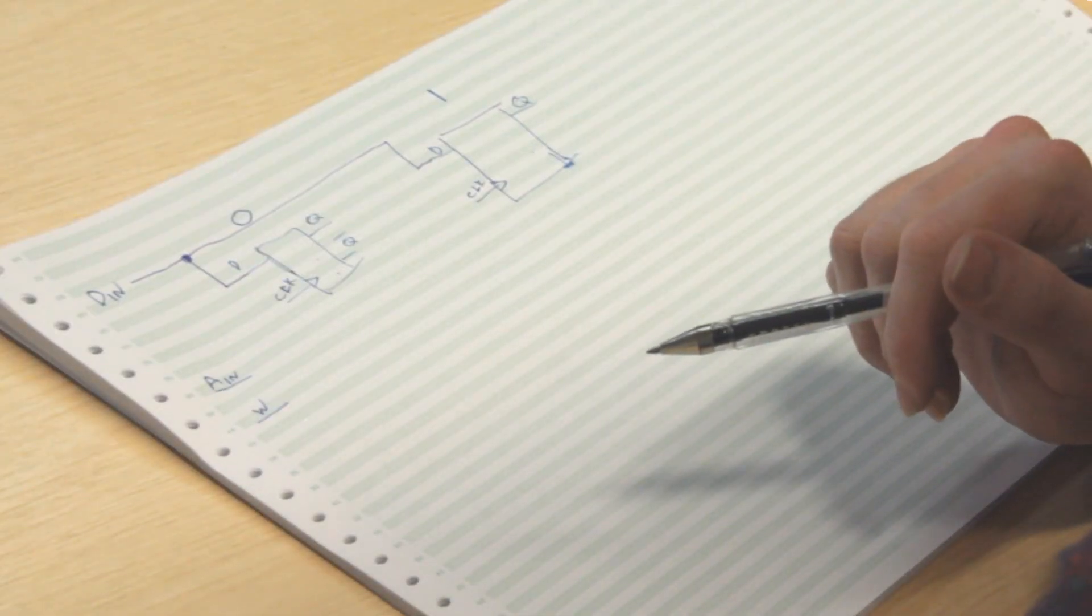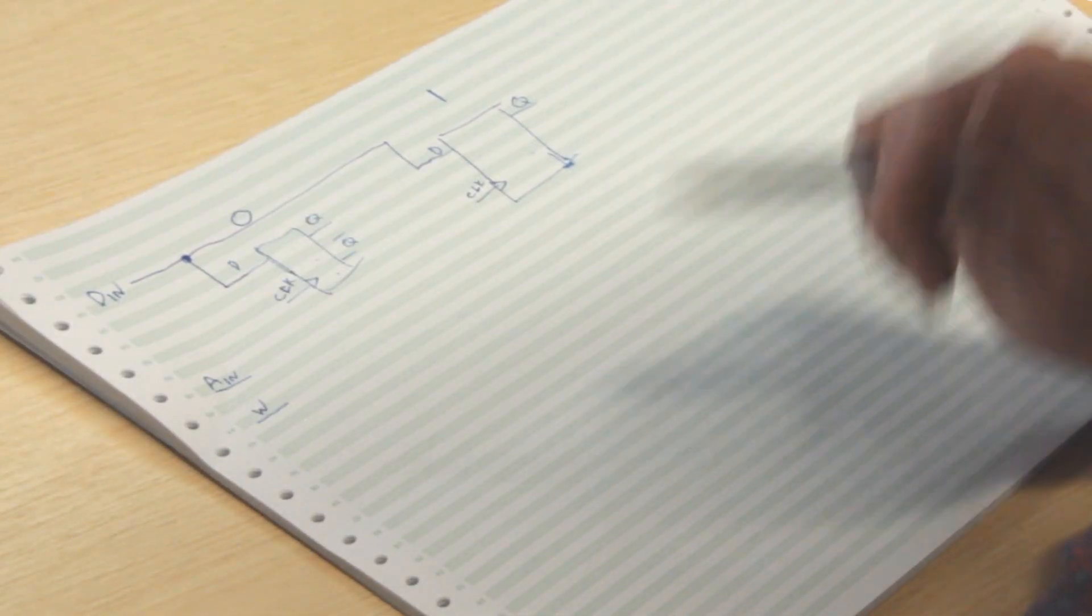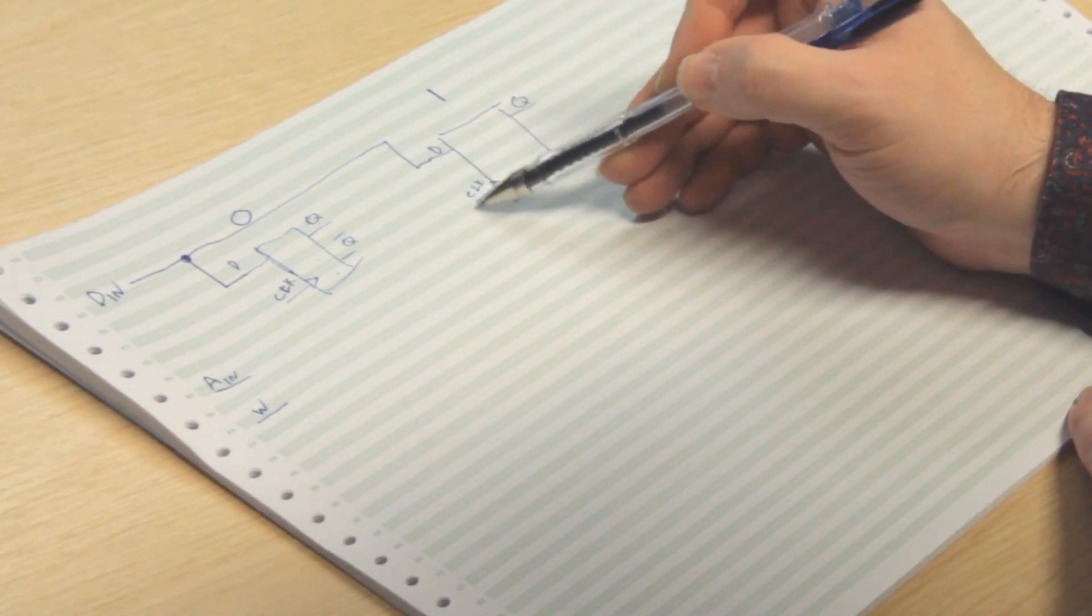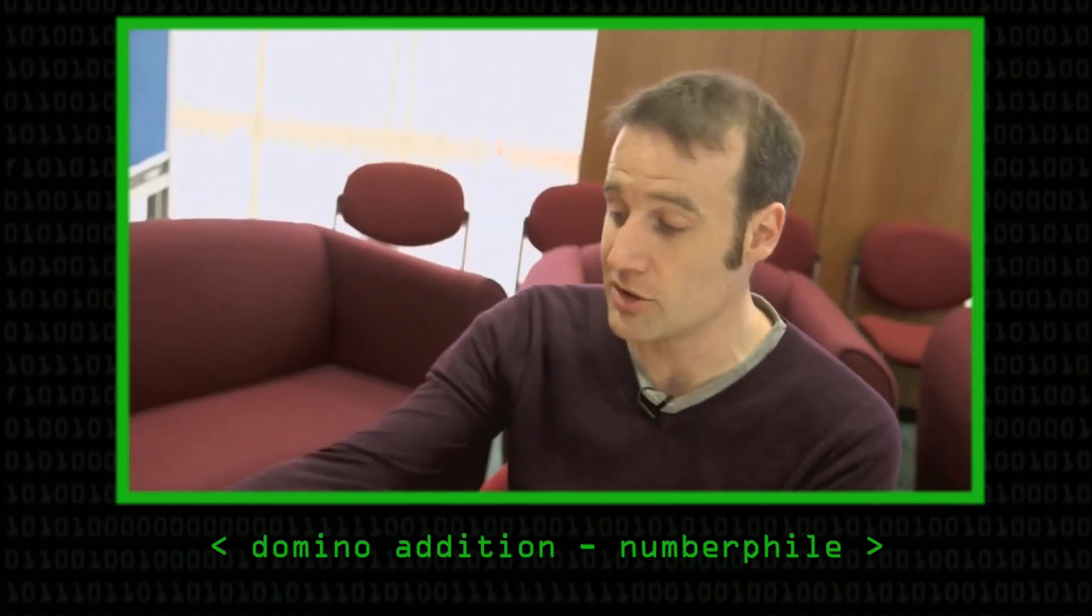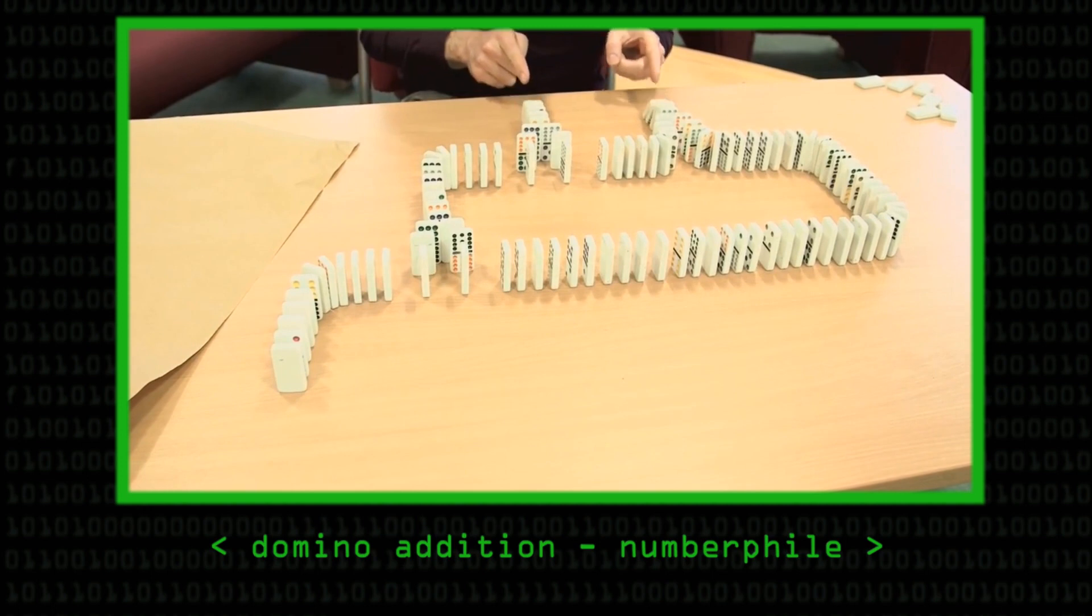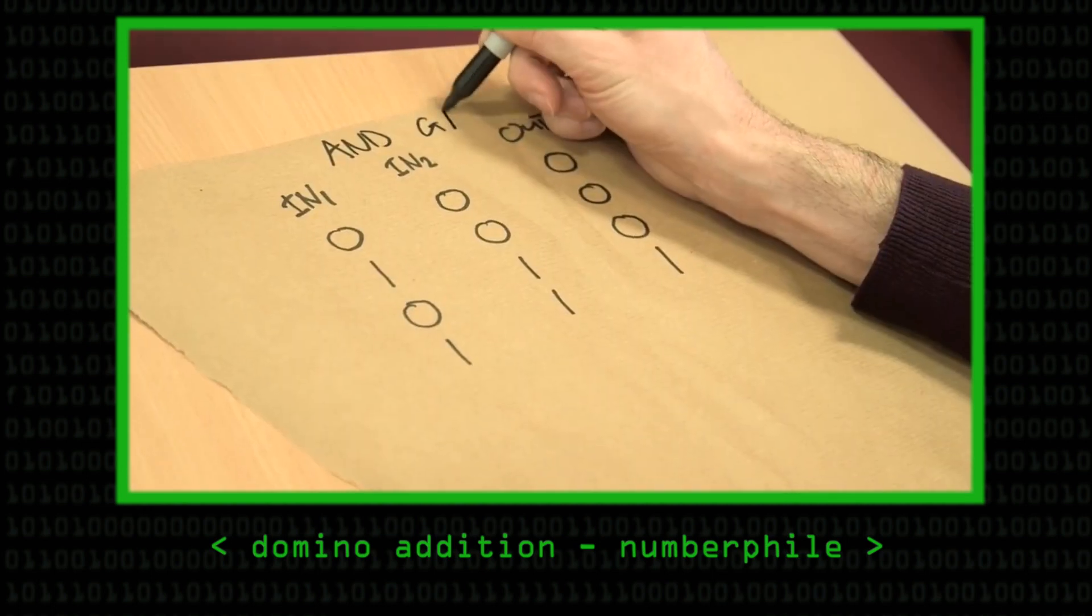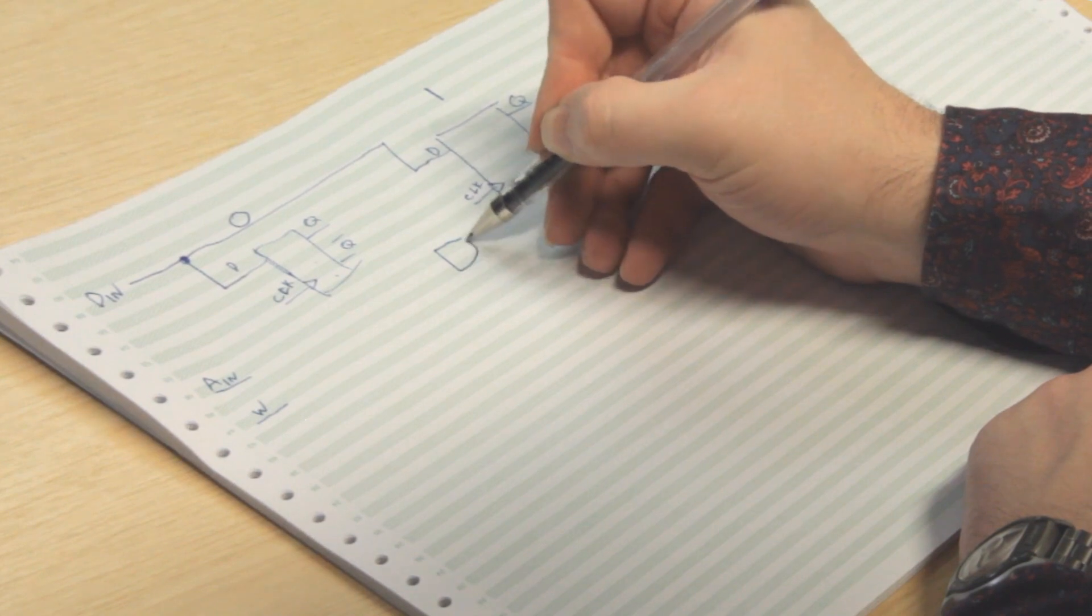I'm going to start with flip-flop one because it's the simpler one to think about how we do this. We want this clock input to be strobed when W is strobed and AIN contains a one. And so the easiest way to do that, if you remember, are AND gates. And you can look back at some of the videos on Numberphile if you've forgotten about them. This is an AND gate. So if we put an AND gate in here, we draw that like so.